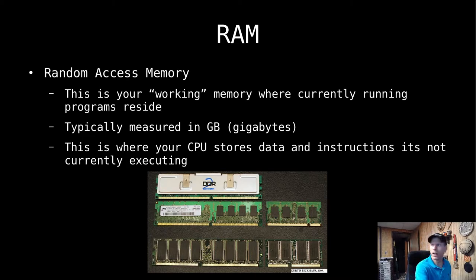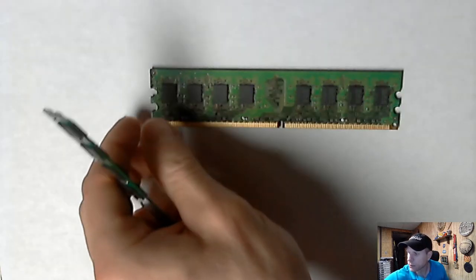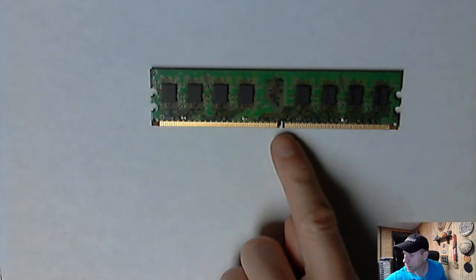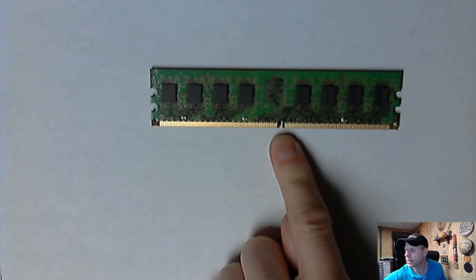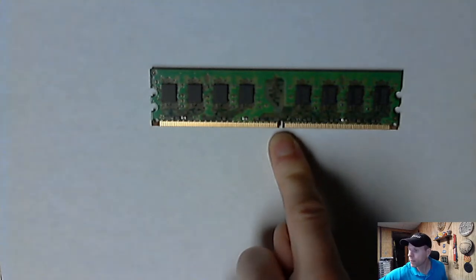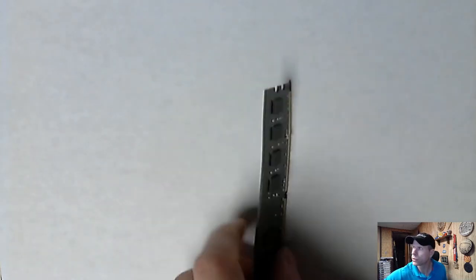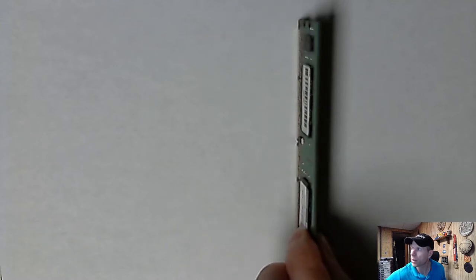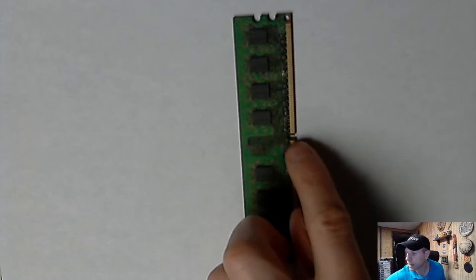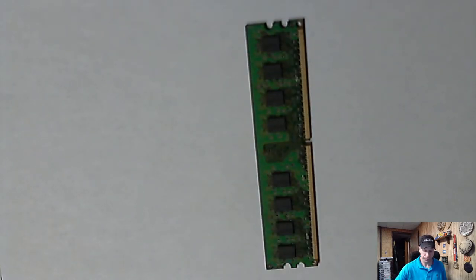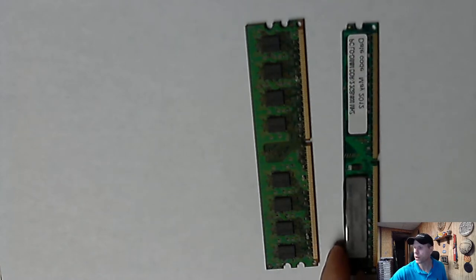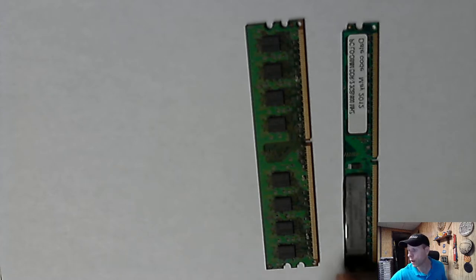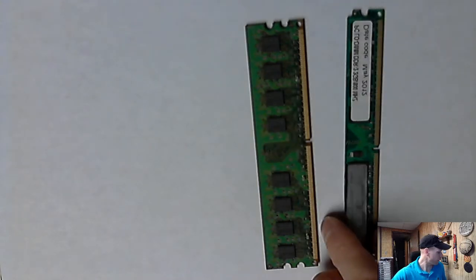RAM comes in different form factors. The RAM on the right in the picture is more like a laptop stick; the left is more for a desktop. Each stick has a notch that helps line it up when installing — you align that notch, slide it down, and it snaps into place. These are pretty old sticks I kept around, but they give you a feel for it.